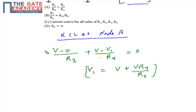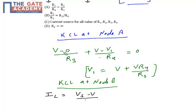Now again I am going to apply the KCL at node B. If I apply the KCL at node B, sum of the incoming current equal to sum of the outgoing current, so my load current IL must be equal to Vs minus V by R1 plus V1 minus V by R2.